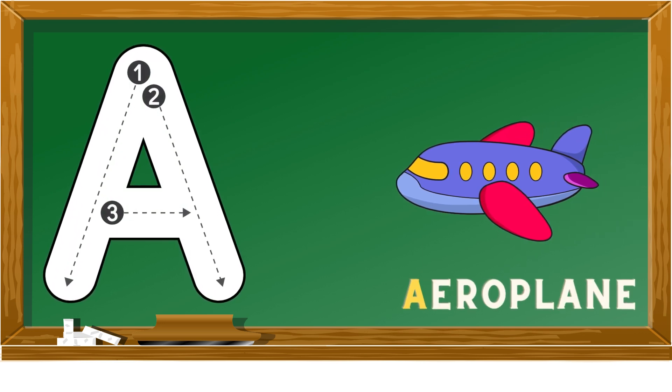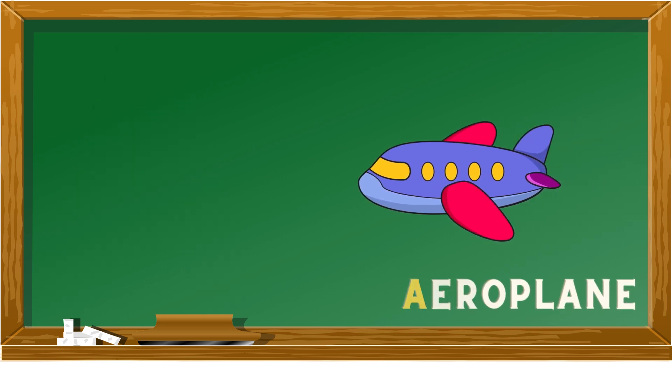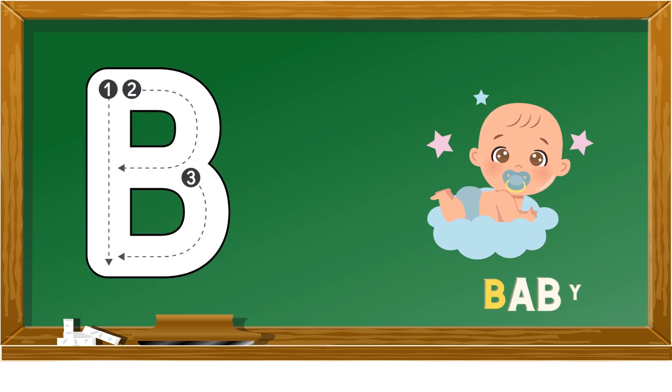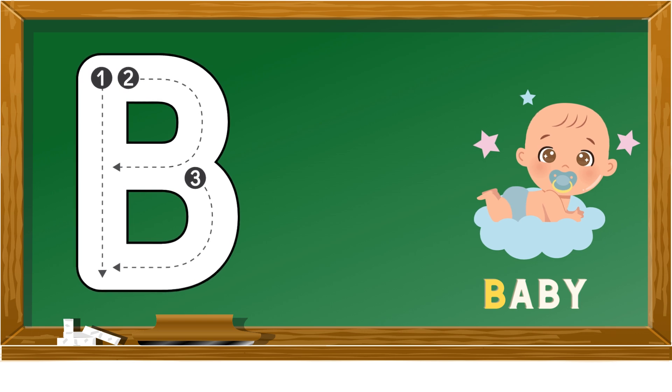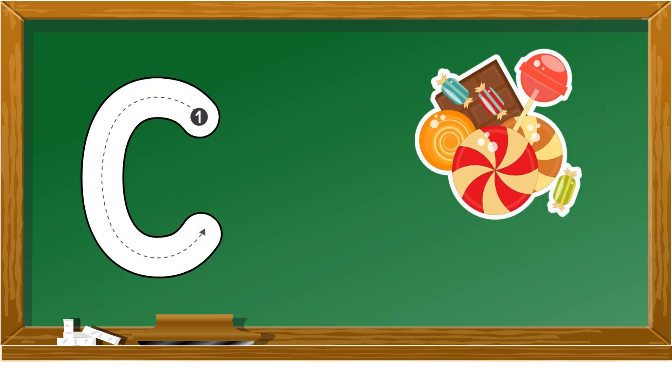A is for aeroplane, B is for baby, C is for candy.